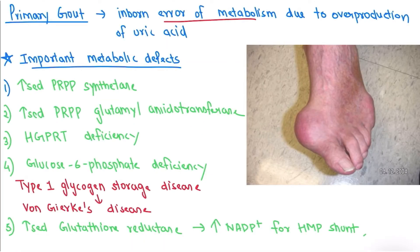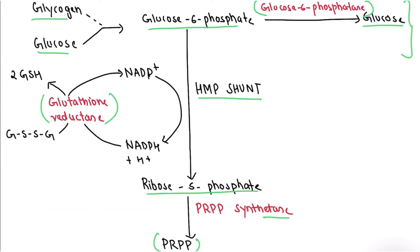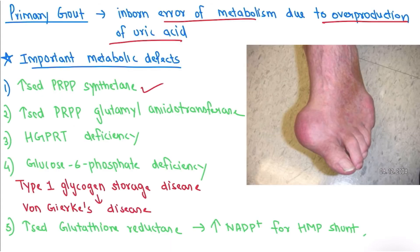What is primary gout? Primary gout is an inborn error of metabolism due to overproduction of uric acid. The causes include: first, increased PRPP synthetase activity — normally under feedback control, but in gout this control is absent, so there is increased PRPP production, more purines are synthesized, and more uric acid is produced, leading to joint deposition. Second, increased PRPP glutamyl amidotransferase activity — the same reasoning applies, leading to increased purine and uric acid production.